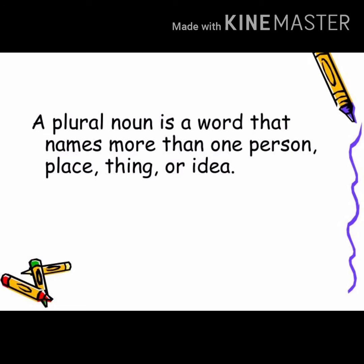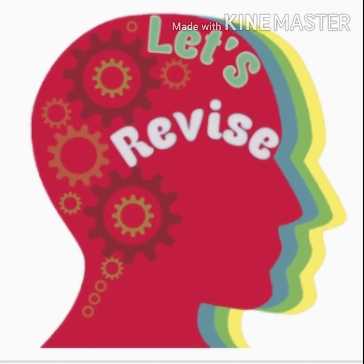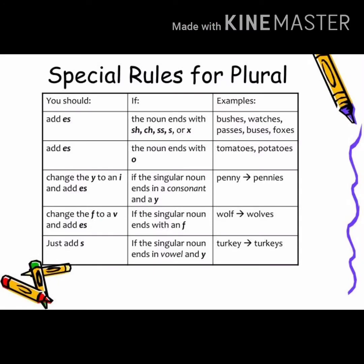Singular noun represents one person, place or thing, and plural noun represents more than one person, place or thing. Now we are going to read some special rules for plural — how we change singular into plural. We add 'es' to the singular if the noun ends with sh, ch, double s, s or x.